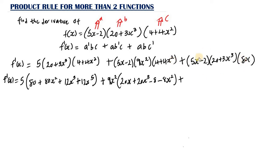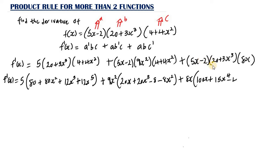Then we take 8s outside and expand (5s minus 2) times (20 plus 3s cubed). So: 5s times 20 gives 100s; 5s times 3s cubed gives 15s to the power of 4 (adding exponents 1 plus 3); negative 2 times 20 gives negative 40; and negative 2 times 3s cubed gives negative 6s cubed. So the third term becomes plus 8s times (100s plus 15s to the 4th minus 40 minus 6s cubed).